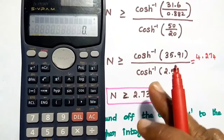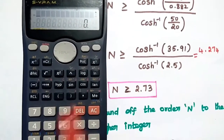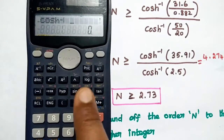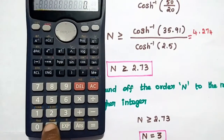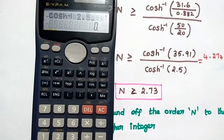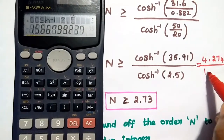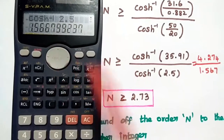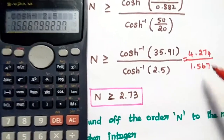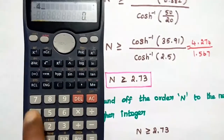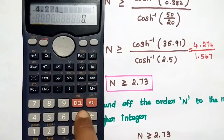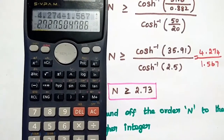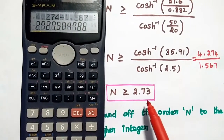Similarly, for the denominator, press HYP, then Shift and cos to get cosh⁻¹, then enter 2.5. The result is 1.567. Taking the ratio of 4.274 divided by 1.567 gives 2.727, which we simplify to 2.73.